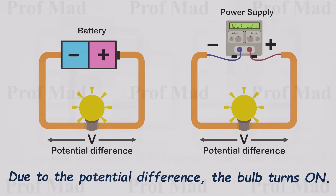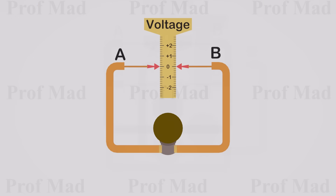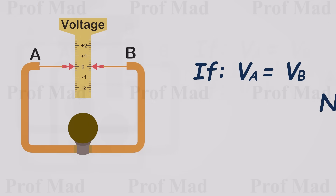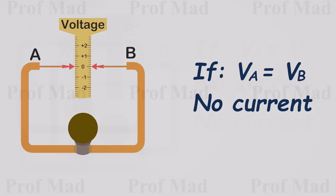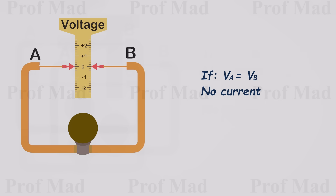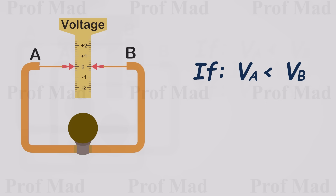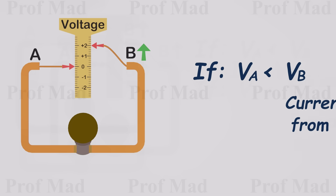When we apply a voltage difference across a conductor connected to a light bulb using any kind of power supply, the light bulb will turn on. Let's represent the voltages at the two ends of the circuit using a scale. When the voltage is equal on both sides, A and B, the light will not turn on because no current flows. Let's set the A end to zero volts and increase the voltage at the B end. If the voltage at B exceeds that of A, current will flow from B to A.